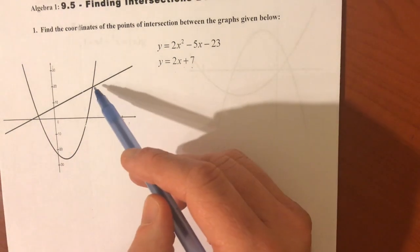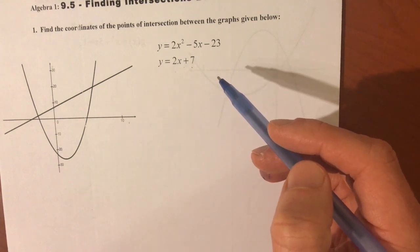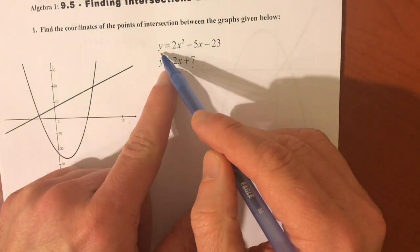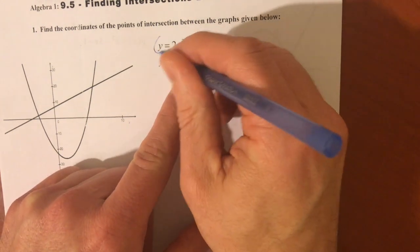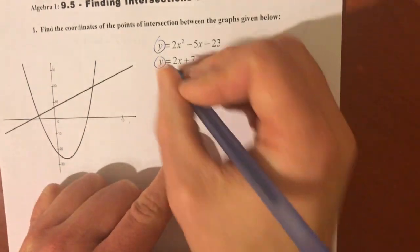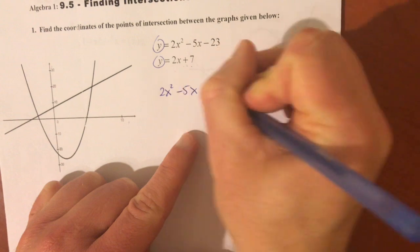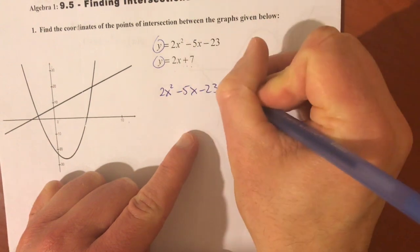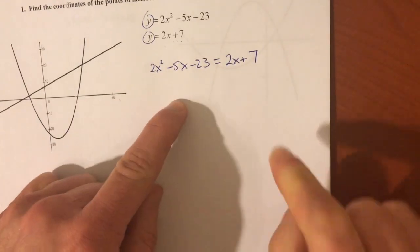If I want to know when these two things are equal, it's basically like we did systems of equations by substitution. If they're both in terms of y and I want to know when they're equal, I set these two things equal to each other. So, take these two equations, whenever you want to know where two graphs intersect, take their two equations and set them equal.